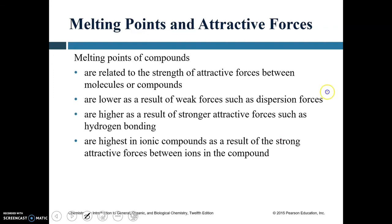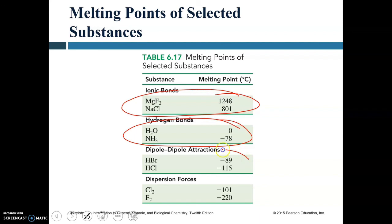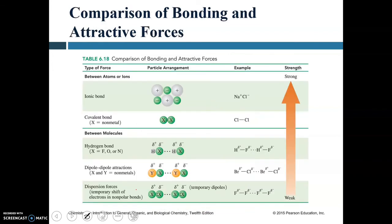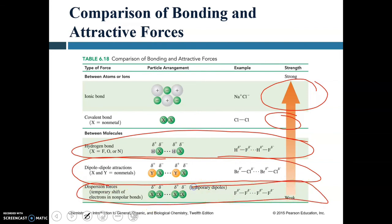Melting points are lowest for substances with dispersion forces, higher for dipole-dipole attractions, higher still for hydrogen bonds, and highest for ionic compounds — which have very strong attractive forces between ions. To summarize the comparison of bonding and attractive forces: ionic bonds have the strongest attractive forces; covalent bonds are not as strong. Between molecules: hydrogen bonds are the strongest, dipole-dipole attractions are second, and dispersion forces are the weakest.